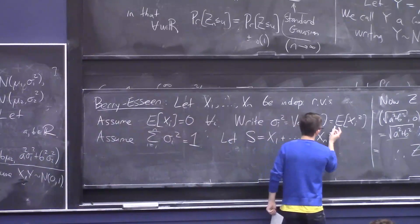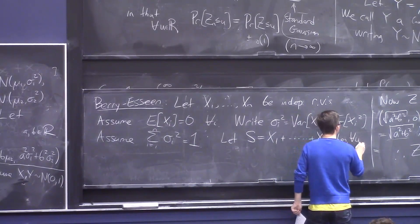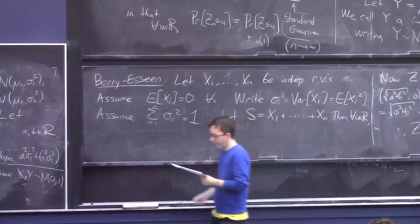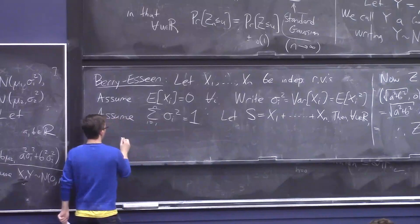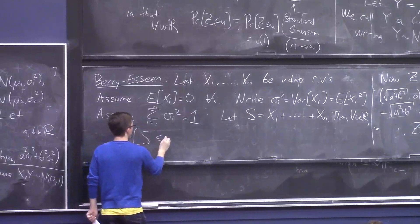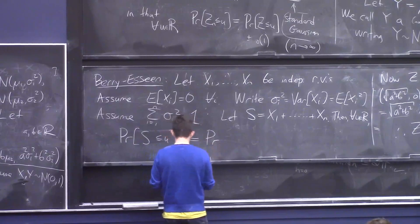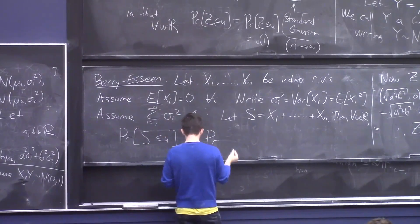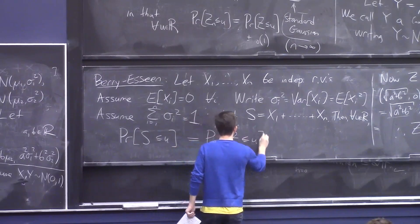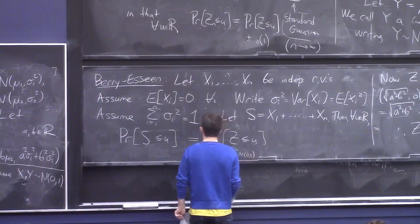That'll look kind of weird, but then we'll talk about it. So, then, for all real numbers u, the probability that S is at most u is basically equal to the probability that a Gaussian is at most u. Okay, this is a Gaussian.